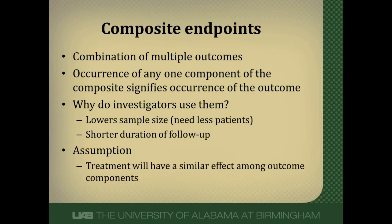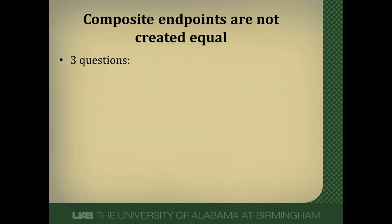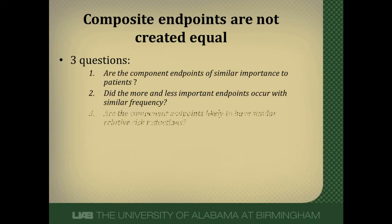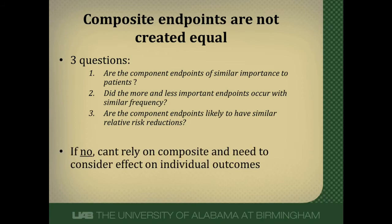The important assumption to remember is that the underlying validity of a composite endpoint rests on the treatment or intervention having a similar effect on each component of the outcome — a very important concept. Composites are not created equally and can be misleading. When you see a composite used in a study, screen it against these three questions: Are the components of similar importance to patients? Do they occur with similar frequency? And does the intervention affect them similarly, with a similar relative risk reduction? If the answer is no to any of these, ignore the composite and look at each individual component instead.